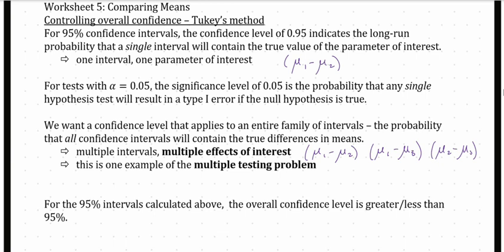If there are more groups — say group 4 and group 5 — that means more and more effects of interest, meaning more and more tests. Every comparison has its own type 1 error, and the more tests we do, the probability that we commit at least one type 1 error goes up. This is one possible example of the multiple testing problem.